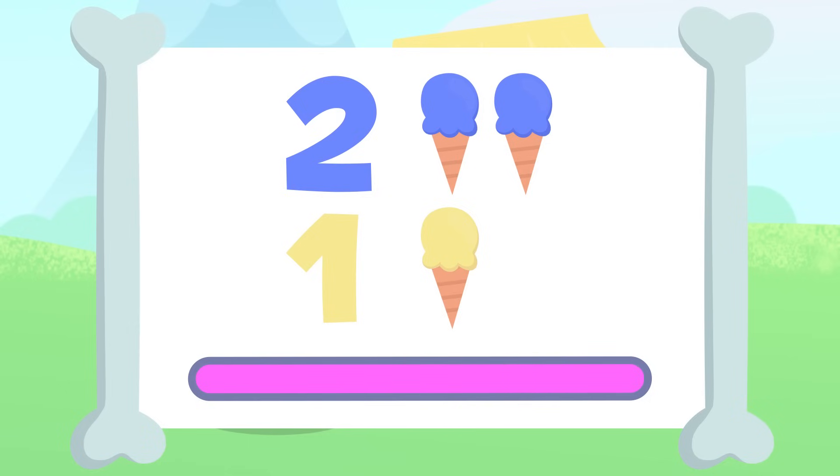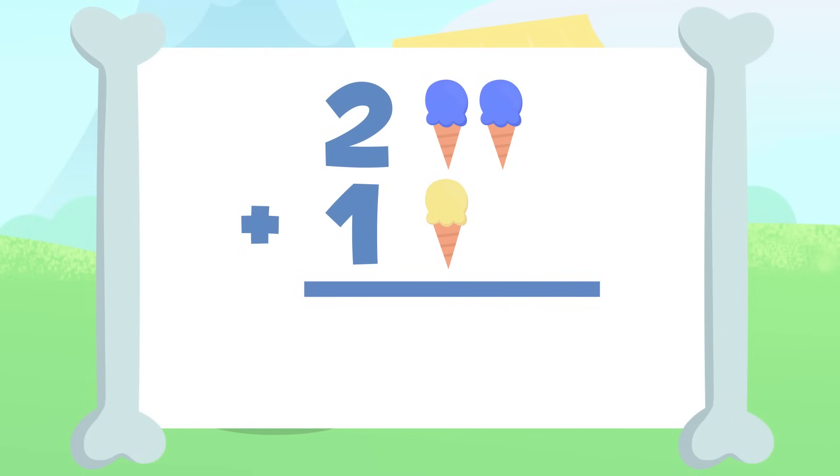You got it! Let me try. All ice creams together would be one, two, three. Three! There are three ice creams. Two plus one equals three. We just did our first addition. The result of adding two plus one is equal to three. Well done, Dino!